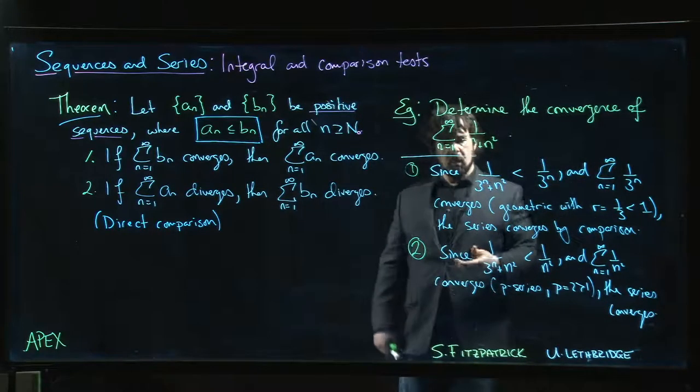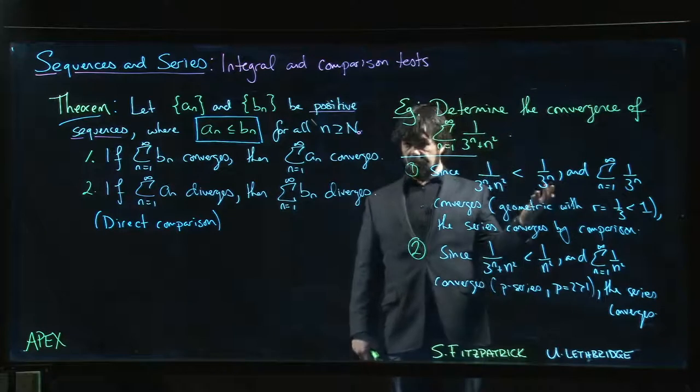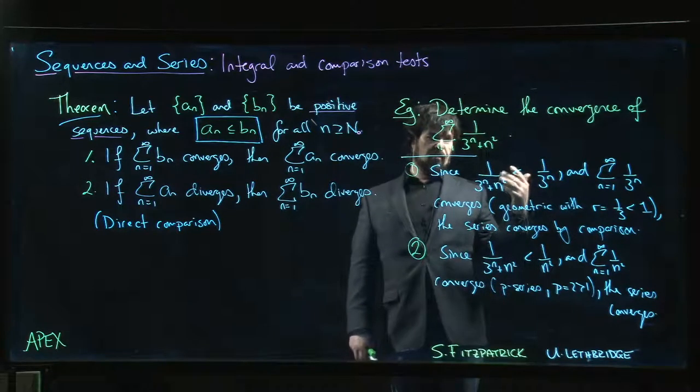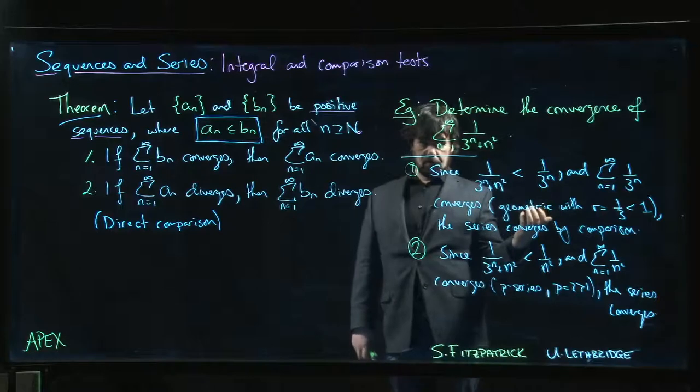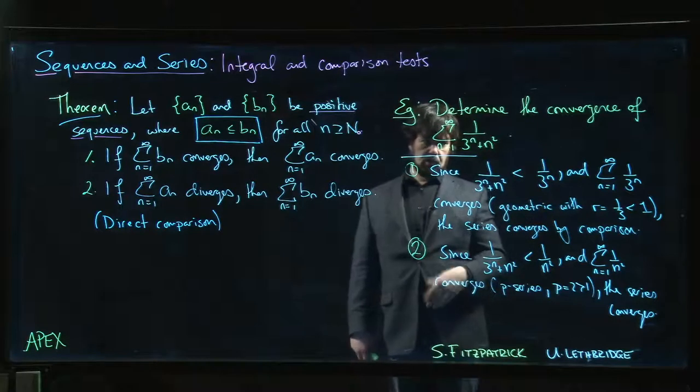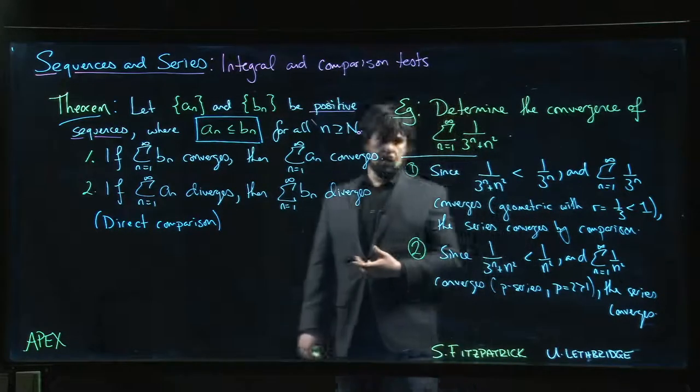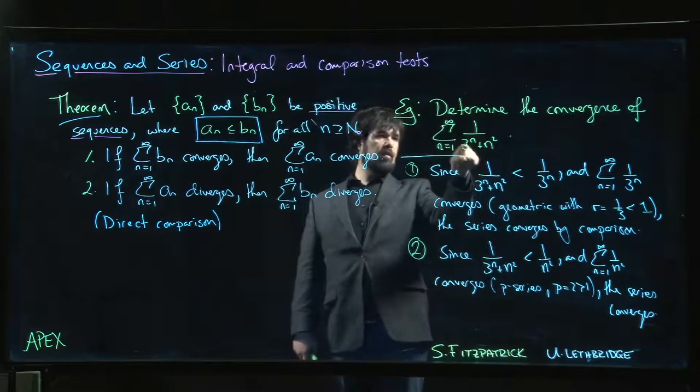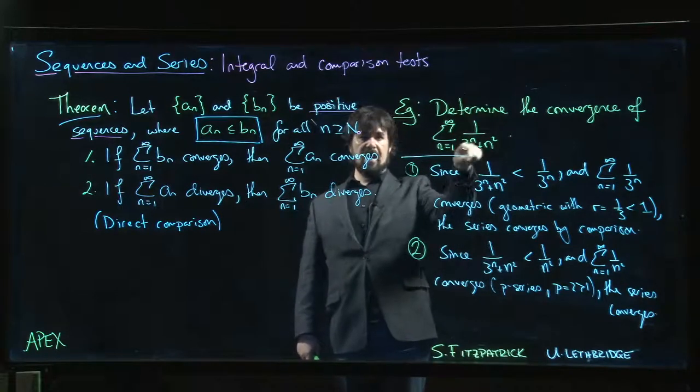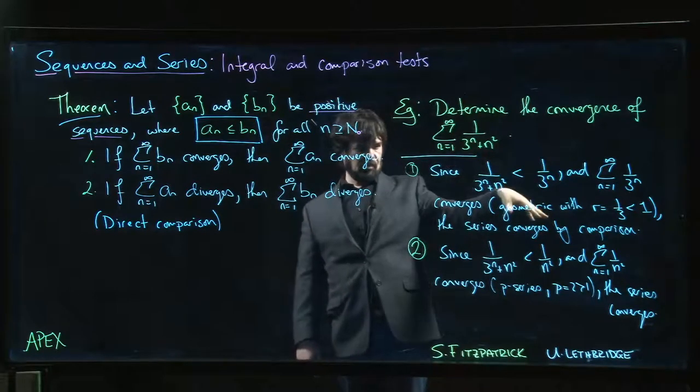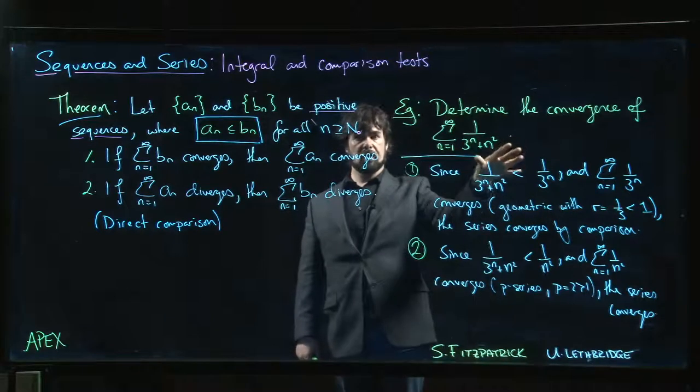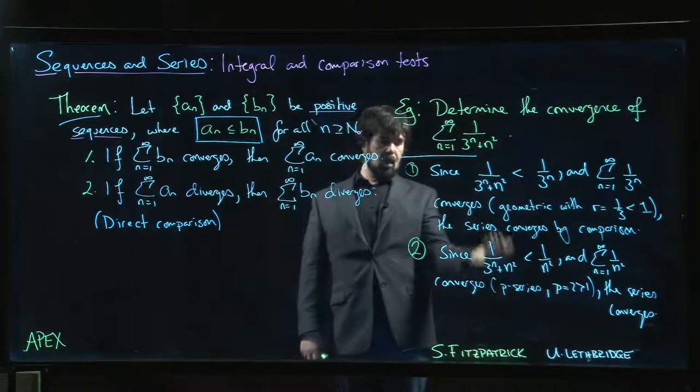Of course, if we only had, say, n here rather than n squared, series is still going to converge, but then option 1 is the only option. We wouldn't be able to go to option 2. Or if this was maybe like 1 half to the n in here or something where the geometric series failed, well, again, we could just then rely on the p-series. In this case, we had both options at our disposal.